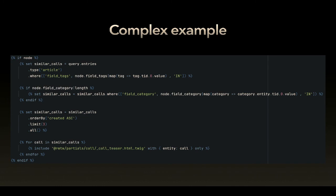Here you are querying nodes of type 'article' and you see what tags are inside, then fetch nodes containing the same tag — taxonomy tags. You can map over it because the entity query needs an array of IDs. Then you add the condition and you can change it. In the end, you order it, limit it, print it out, and iterate over it. It's very easy.